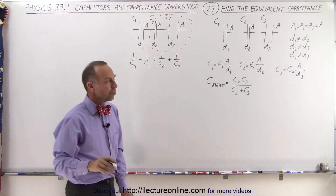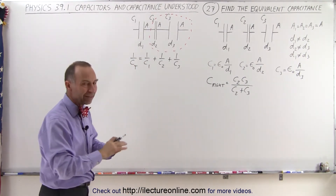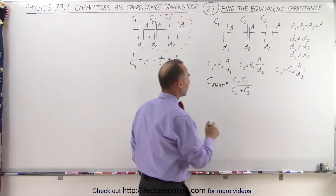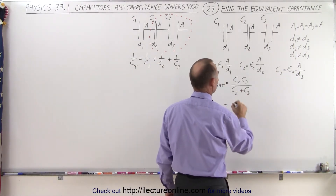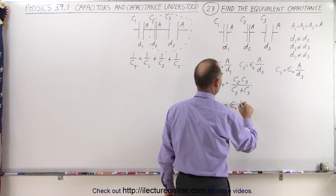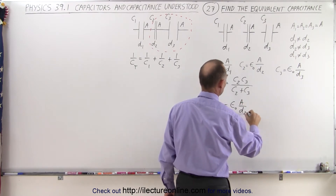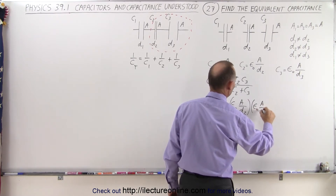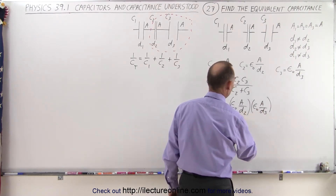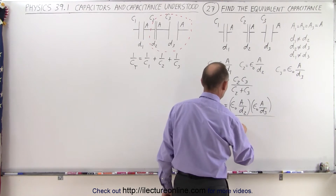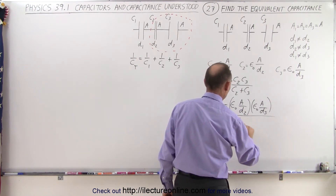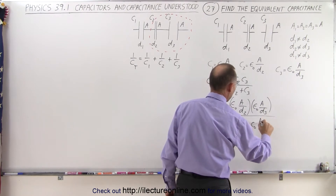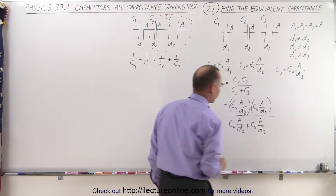That way I can use the equation I like better, which makes it easier to algebraically simplify. So let's plug in the values. This is equal to epsilon sub-naught A over D2, multiplied times epsilon sub-naught A over D3, all divided by the sum, which is epsilon sub-naught A over D2 plus epsilon sub-naught A over D3.